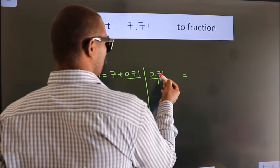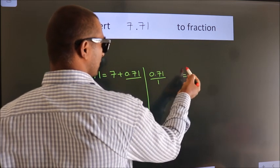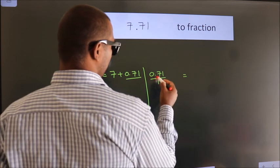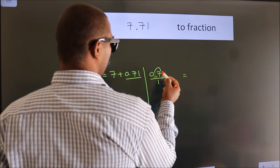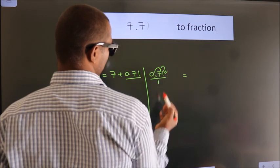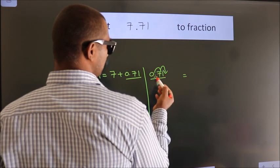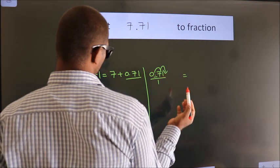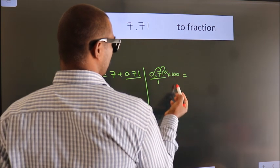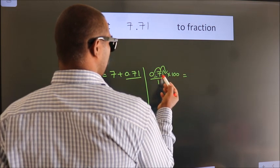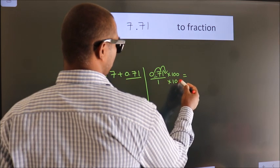To convert this to fraction, we have to move this decimal after 1, 2 numbers. To move this decimal after 2 numbers, multiply it with 100. Whatever we are multiplying in the numerator, in the denominator also do the same.